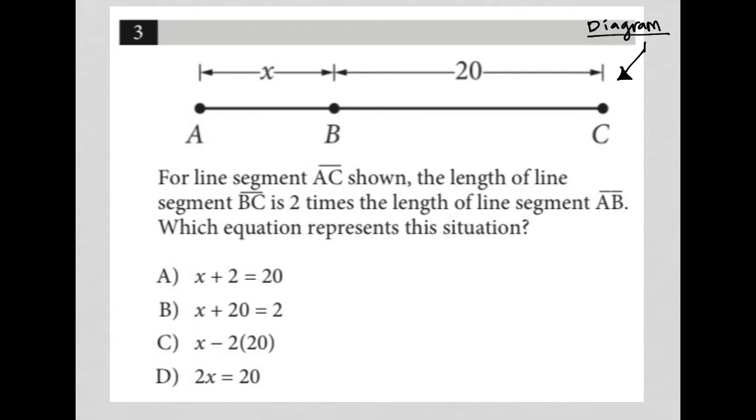And all that means is we're going to heavily rely upon the visual information we have here. The question itself says for line segment AC, which we see here, the length of line segment BC, which is the 20, that's the length of line segment BC, is two times the length of line segment AB, and line segment AB is this X right here.